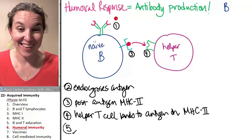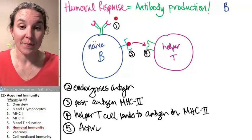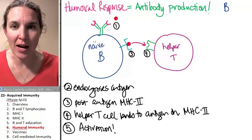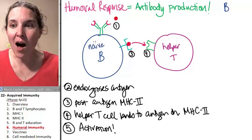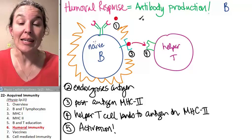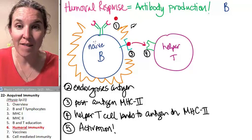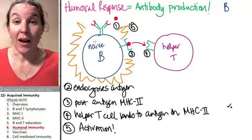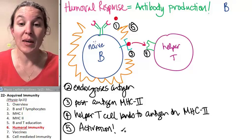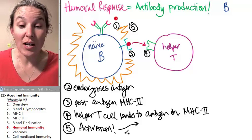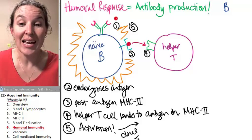But when that binding happens — activation! When this binding happens, my naive B cell is Superman, now it is activated. So what happens when you get activated? It's time for some nuclear warfare, because the naive B cell starts to divide through a process called clonal expansion.